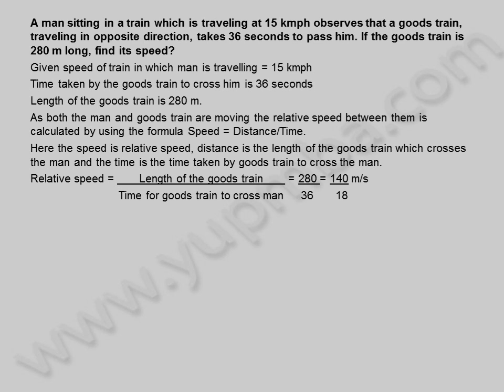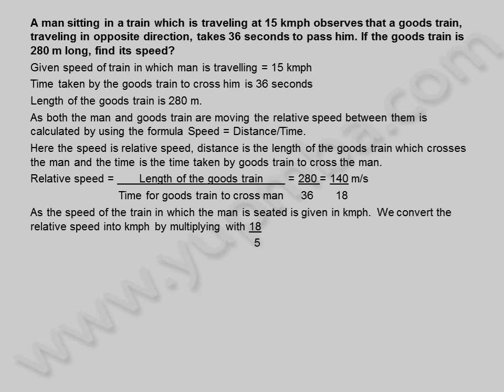Relative speed is equal to length of the goods train divided by time for goods train to cross man, which is equal to 280 divided by 36, equal to 140 divided by 18 meters per second.